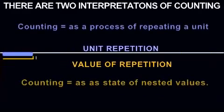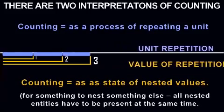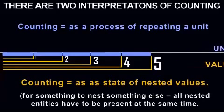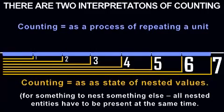As a result, there are two interpretations of counting. In one interpretation, counting is a process of repeating a unit. In another interpretation, counting is a state of nested values. For something to nest something else, all nested entities have to be present at the same time.